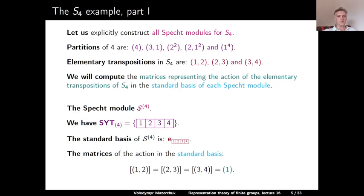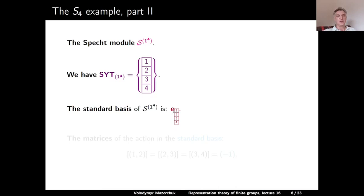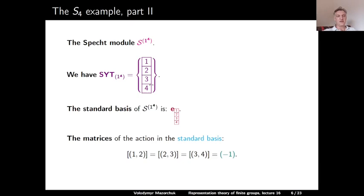The next Specht module is S^{1,1,1,1}, which is exactly the sign S_n module. The set of standard Young tableaux for this partition again consists of one element: a single column with 1, 2, 3, 4 written in natural order. The standard basis consists of one polytabloid corresponding to this unique standard Young tableau. Since all elementary transpositions are odd elements, the matrices of their action are all equal to the -1 times the 1×1 identity matrix.